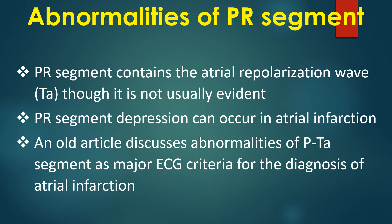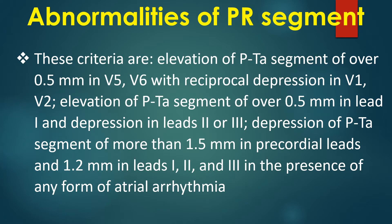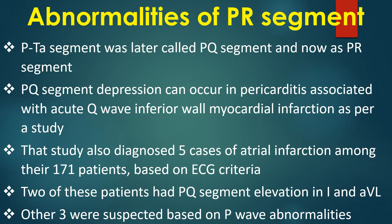An old article discusses abnormalities of the PTA segment as major ECG criteria for the diagnosis of atrial infarction. These criteria are: elevation of PTA segment of over 0.5 mm in V5-V6 with reciprocal depression in V1-V2; elevation of PTA segment of over 0.5 mm in lead I and depression in leads II or III; depression of PTA segment of more than 1.5 mm in precordial leads and 1.2 mm in leads I, II and III in the presence of any form of atrial arrhythmia. The PTA segment was later called the PQ segment and is now known as the PR segment.